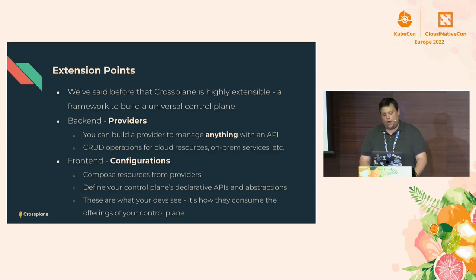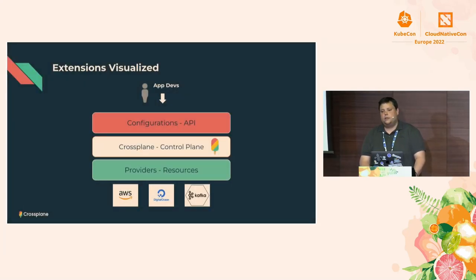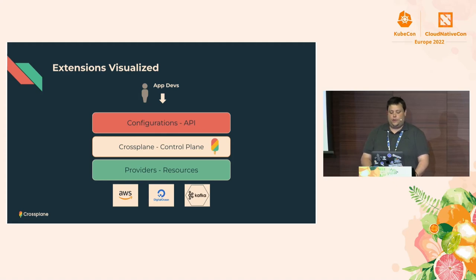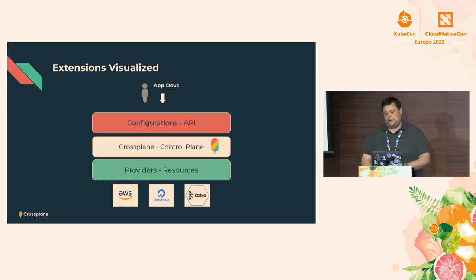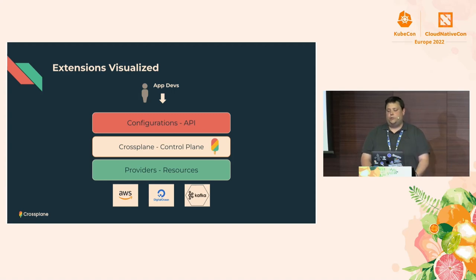Looking at the visualization: in the middle we have our Crossplane control plane running. On the bottom level we have the provider resources. For example, if you want to create a Kafka cluster for your customers and you have two cloud providers available — AWS and DigitalOcean — it doesn't matter which one the Kafka cluster is running on. As the infrastructure creator, you can specify what version is needed for AWS and DigitalOcean and for Kafka, and if it's not available in your Kubernetes cluster, we set it up for you. On top of that, you have all the configuration — the compositions and representations that your app devs can consume in your control plane.